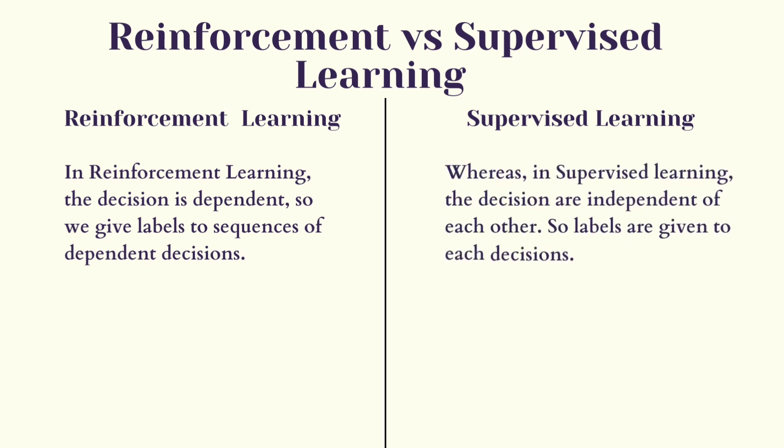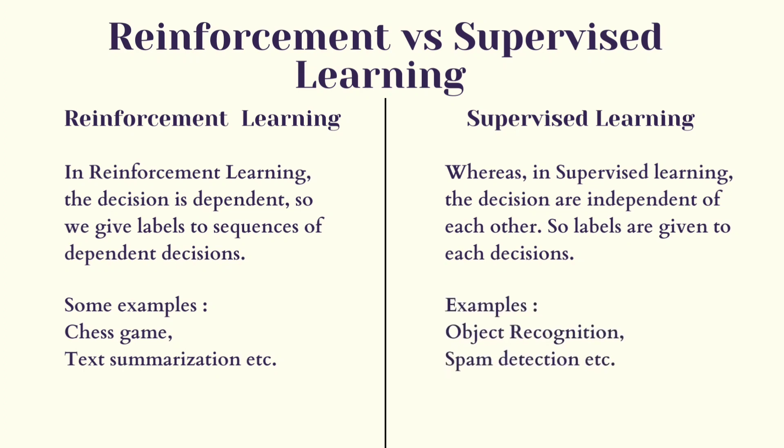So labels are given to each decision. Some examples of reinforcement learning are like chess games, text summarization, etc., and the examples of supervised learning are like object recognition, spam detection, etc.